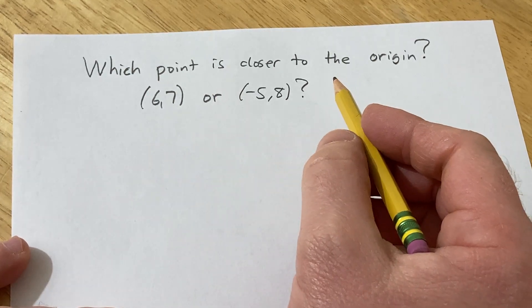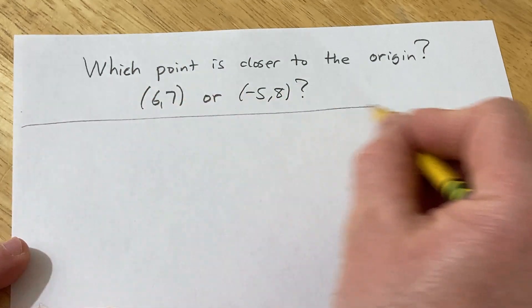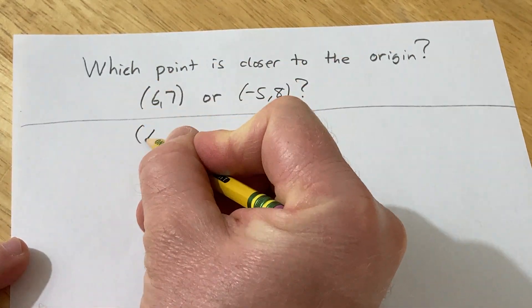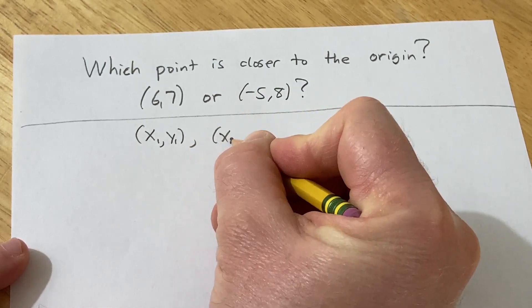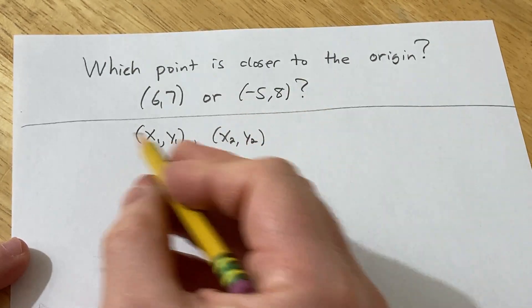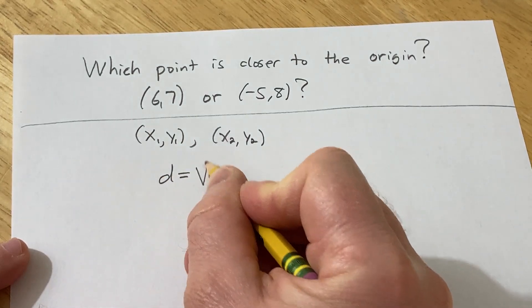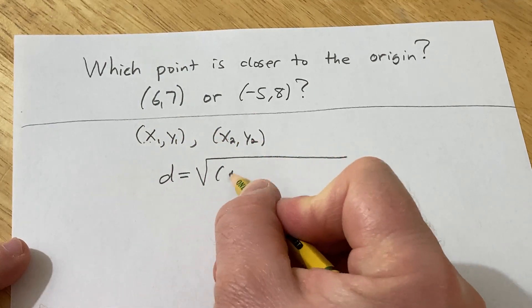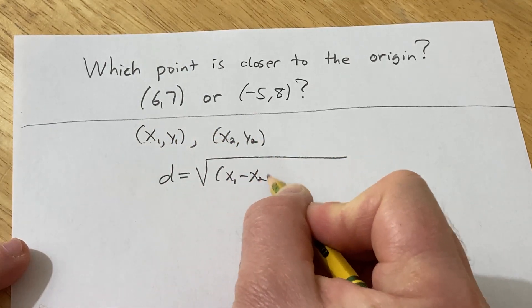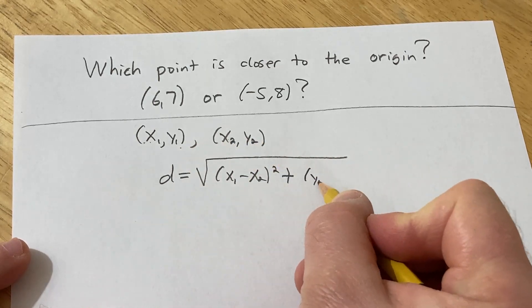So to answer this question we're going to use something called the distance formula. The distance formula says if you have a point, say x1 comma y1, and another point x2 comma y2, the distance between these points is given by the formula d equals the square root of, and basically you subtract the x-coordinates and you square the result, you add, and then you subtract the y-coordinates and square the result.